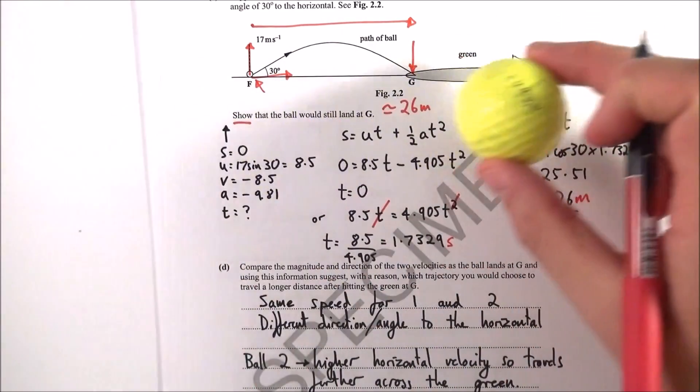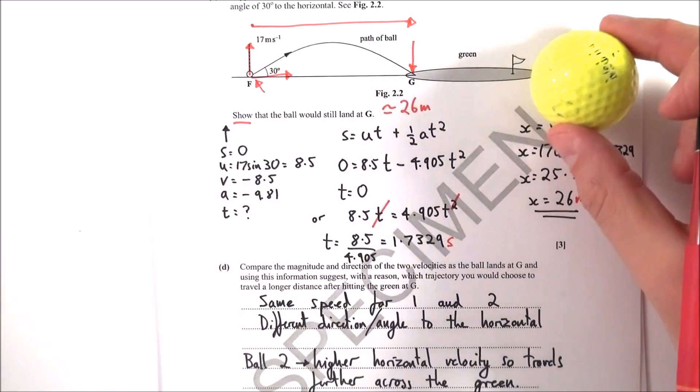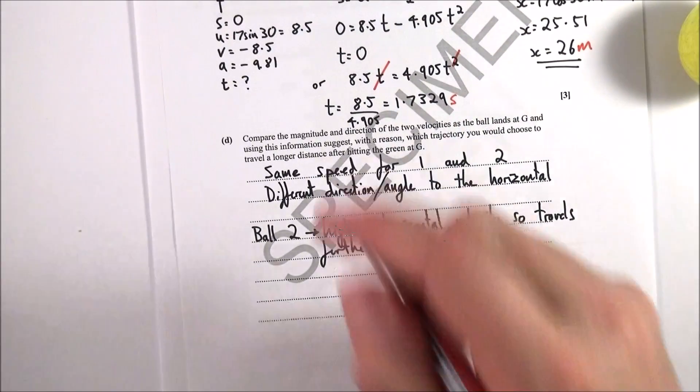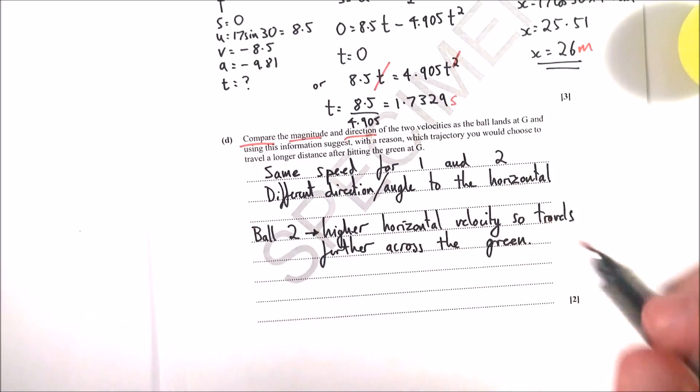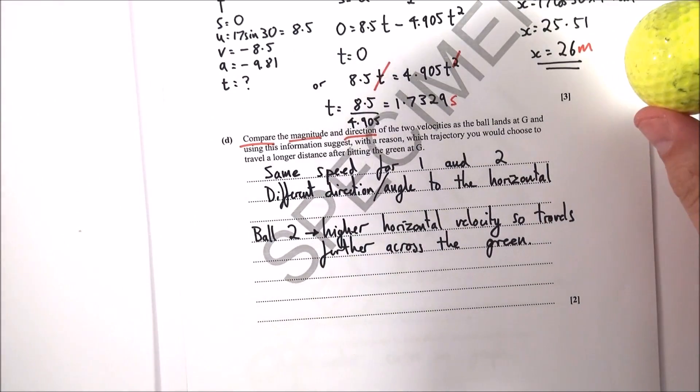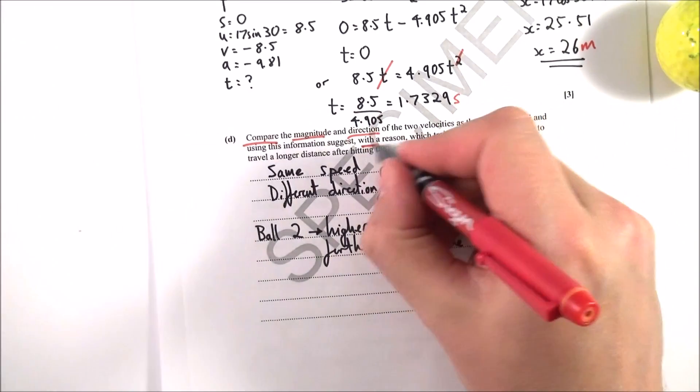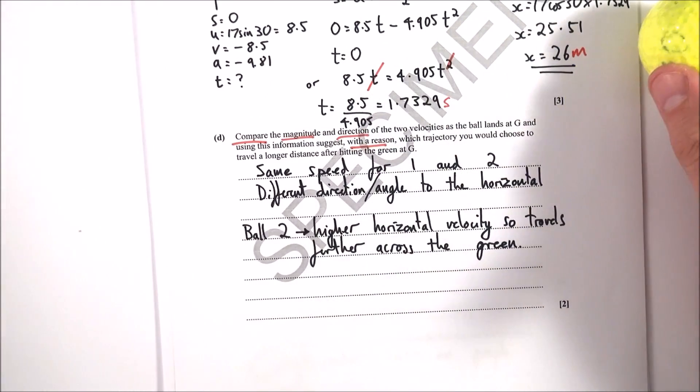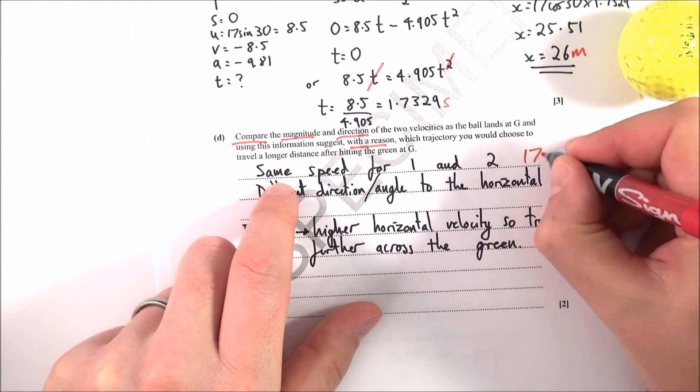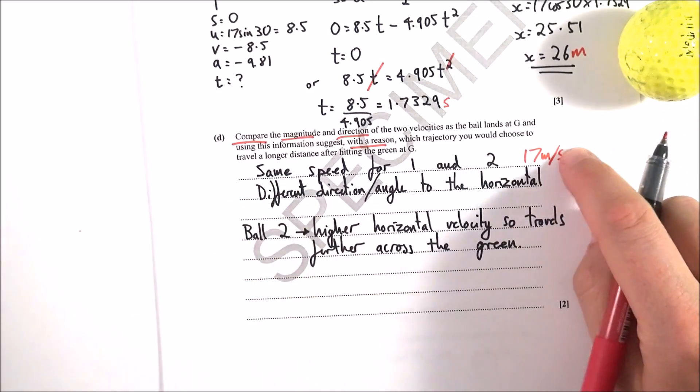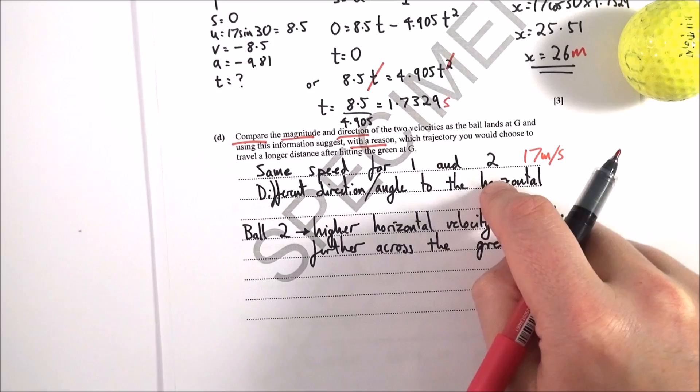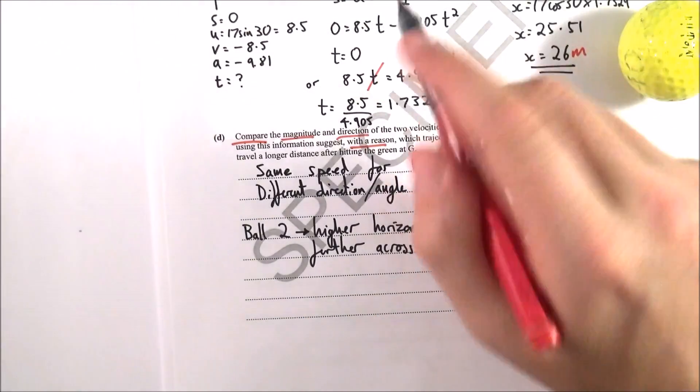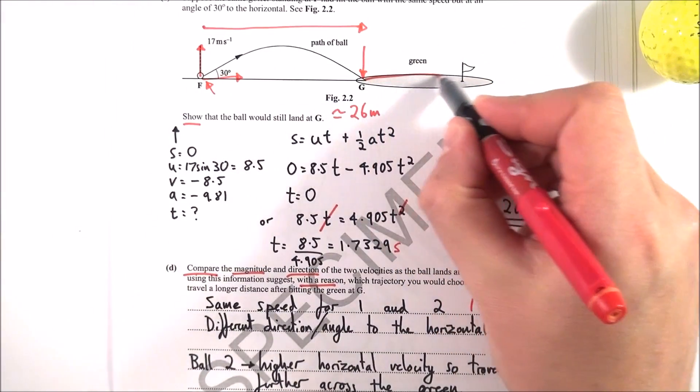So it's going at a shallower angle but it's going faster horizontally, so although it spends less time in the air, it does actually travel the same distance. Then part D, what I've got to do is compare the magnitude and the direction of the two velocities as the ball lands at G, and use this information to suggest with a reason which you would choose to travel a longer distance. So basically the magnitude is the same—they both travel at 17 meters per second. The difference is that they have a different direction or angle to the horizontal. So that's pretty much stating just what it has in the graph.